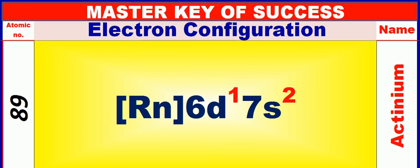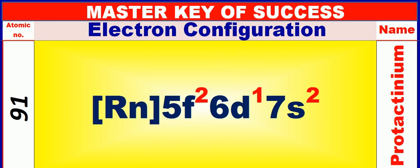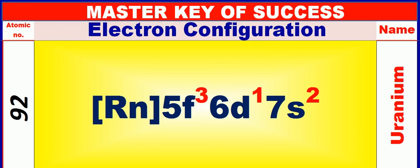Atomic number is 89 and name of atom is Actinium. Atomic number is 90 and name of atom is Thorium. Atomic number is 91 and name of atom is Protactinium. Atomic number is 92 and name of atom is Uranium.